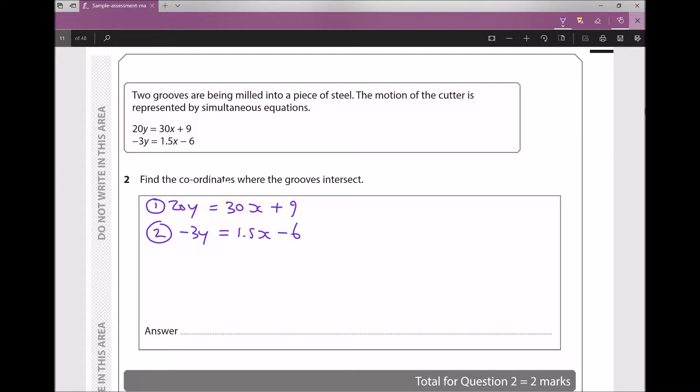If we look at the x coefficient in equation two, it's 1.5, and the x coefficient in equation one is 30. So what I'm actually going to do is I'm going to times equation two by 20.